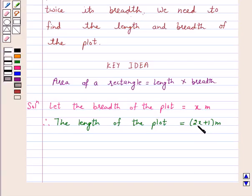Now, area is given to us equal to 528 meters square. So we know that area is equal to length into breadth.